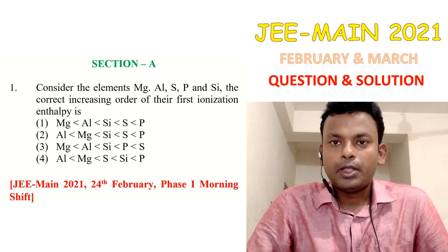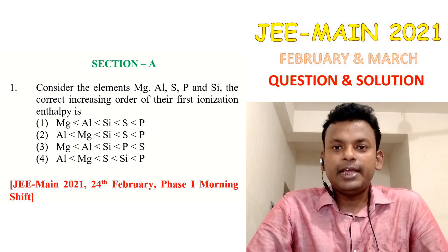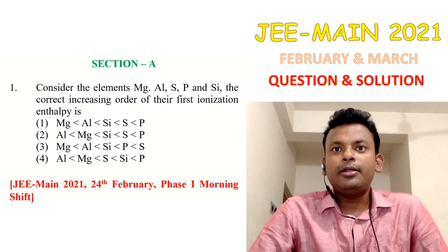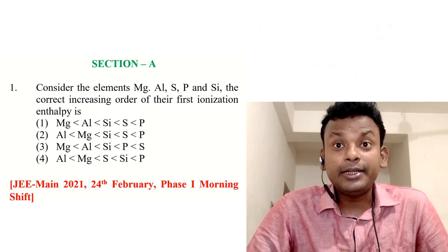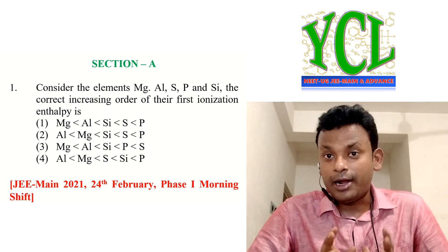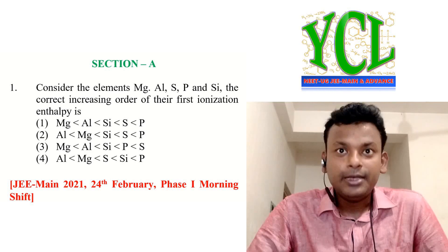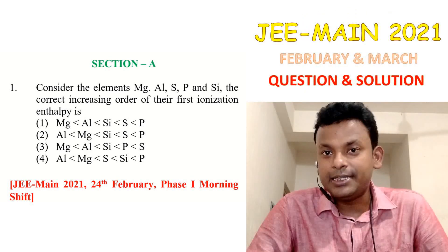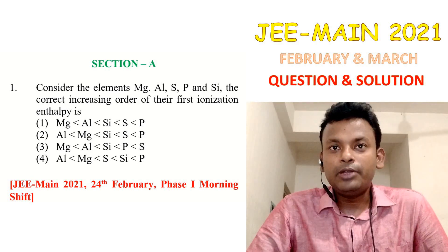Section A, Question 1: Consider the elements magnesium, aluminium, sulfur, phosphorus, and silicon. The correct increasing order of their first ionization enthalpy is — options are given. This question was set in JEE Main 2021, 24th February, page one, morning shift.